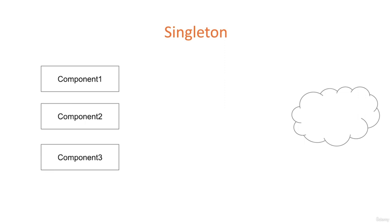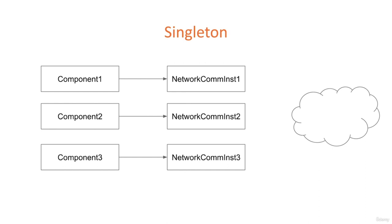Let's say we have a project with three components, and these three components need to access some external resource — for example, an API on the Internet. A naive solution would be to have a network communicator and instantiate that network communicator every time we need to access that resource. So component one has its own instance, component two has its own instance, and we communicate with the resource in this way. There are a few problems with this — first of all, it is resource inefficient. You might be on a smaller device or on a server where you want to conserve resources.